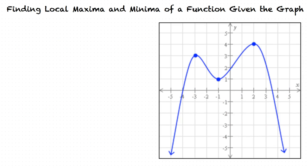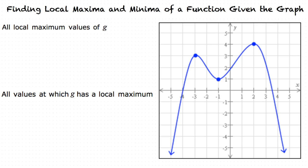Let's use the following graph of function g to find all the local maximum values of function g and all the values at which function g has a local maximum value. Looking at our graph, there are two points where the graph changes direction from increasing to decreasing. Those points are (-3, 3) and (2, 4).